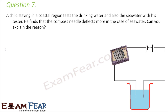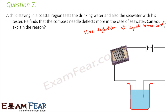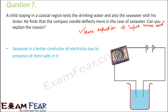Question number seven: a child in a coastal region tests drinking water and sea water with a tester. He finds the compass needle deflects more for sea water. More deflection in the compass needle means the liquid is more conducting — just as a brighter bulb indicates better conductivity. The needle deflects more for sea water because sea water contains salts, and solutions with salts, acids, or bases are better conductors. So sea water is a better conductor than drinking water.